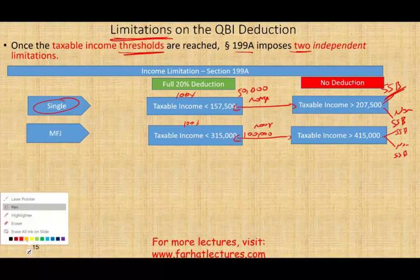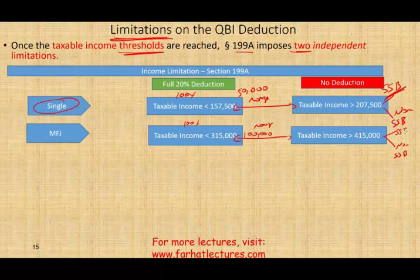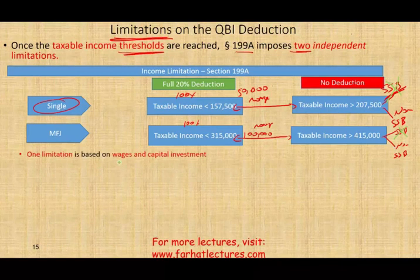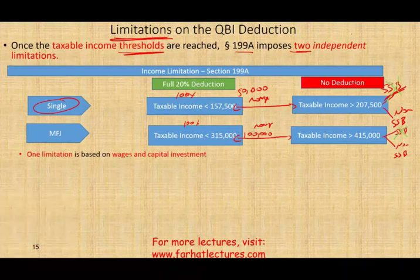If you are a specified service business, once your income exceeds the threshold, you lose your deduction entirely. If you are a non-SSB, then we have to do some computation. One limitation is based on wages and capital investment — what happens once you exceed $207,500 as a non-specified service business.